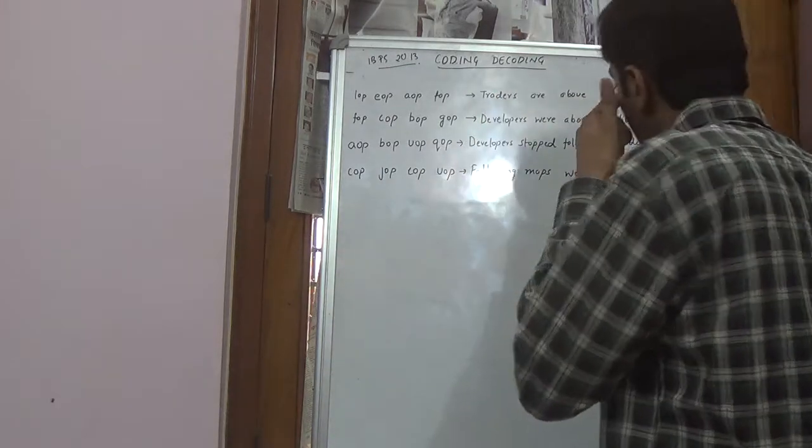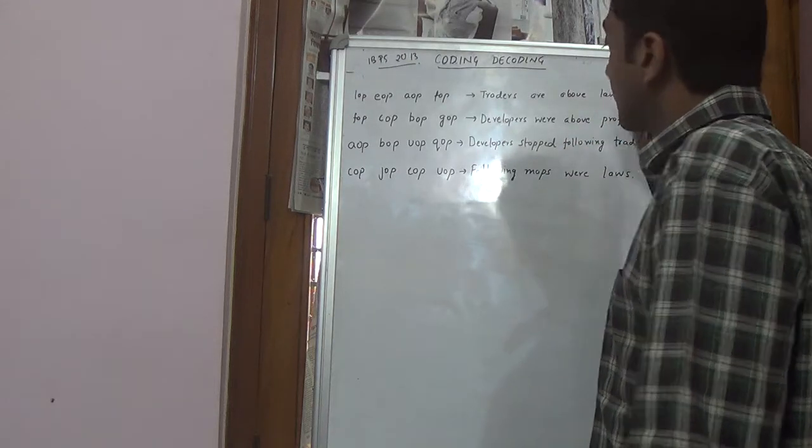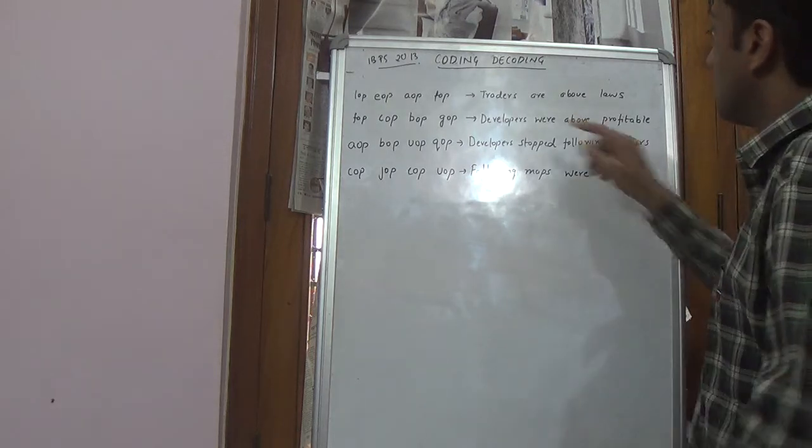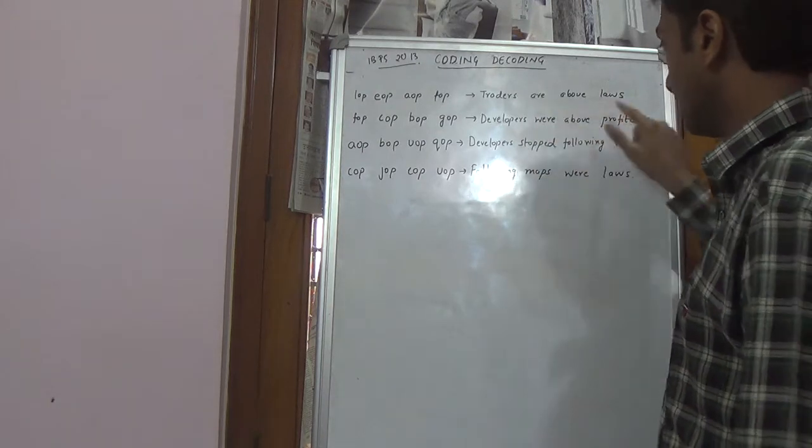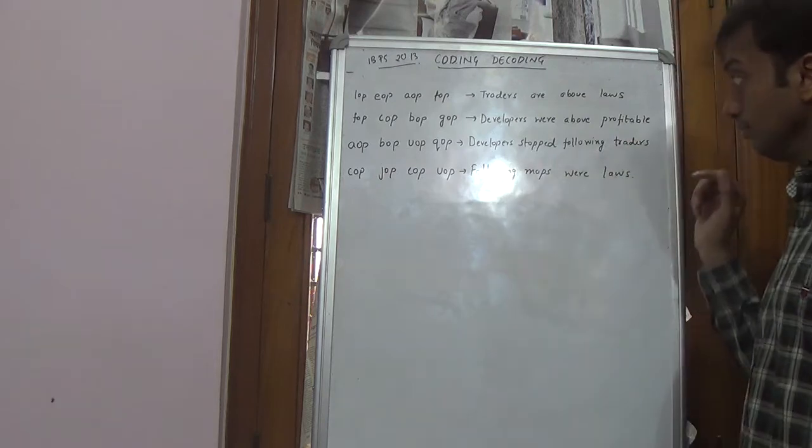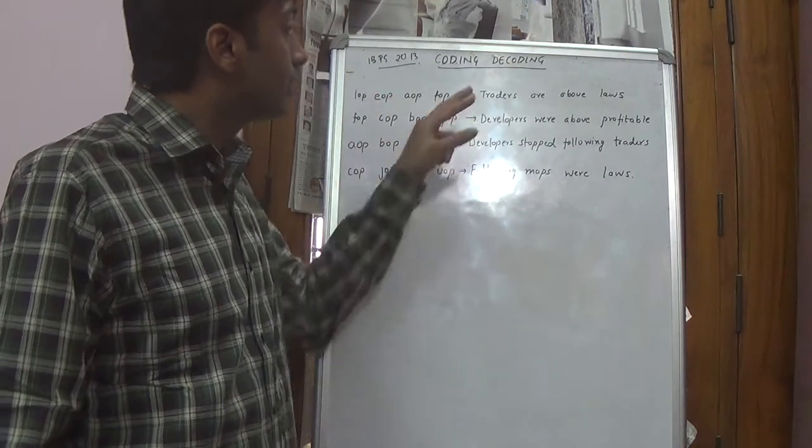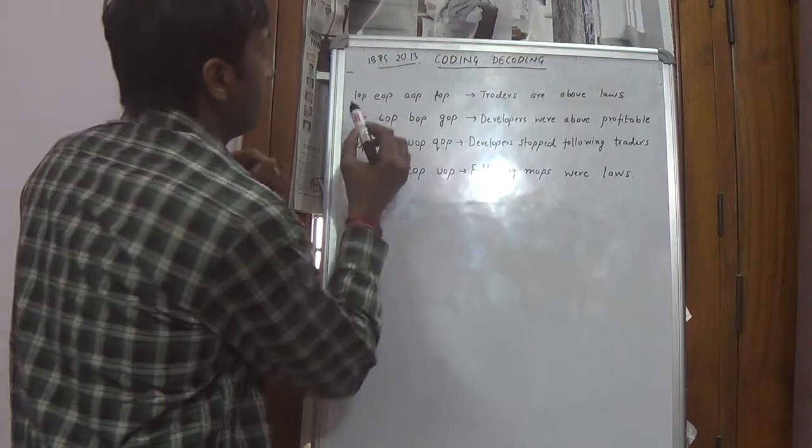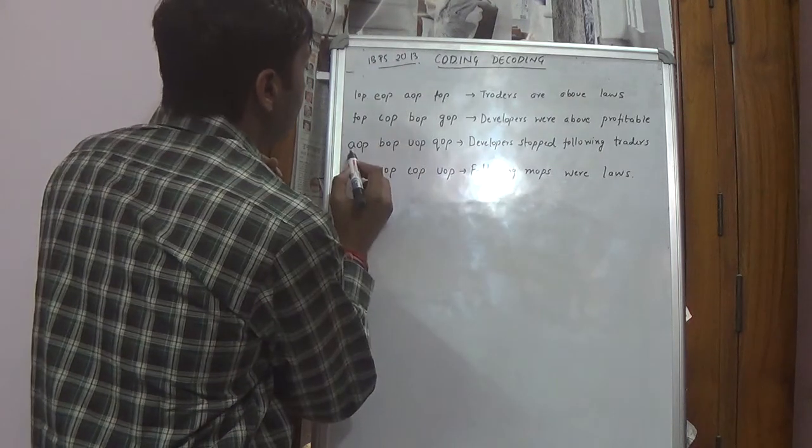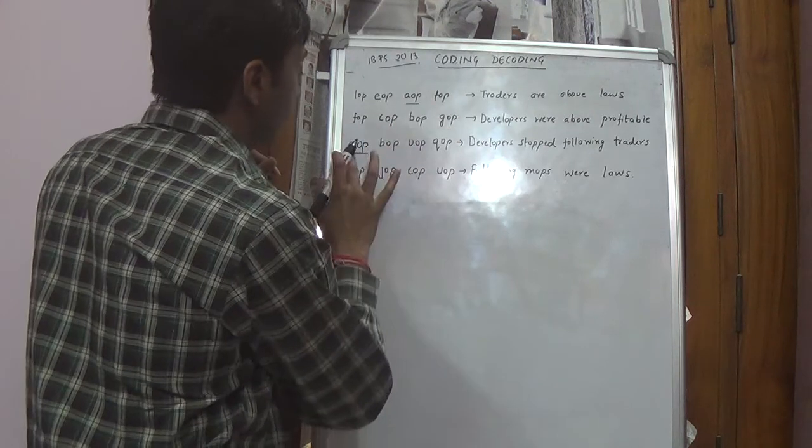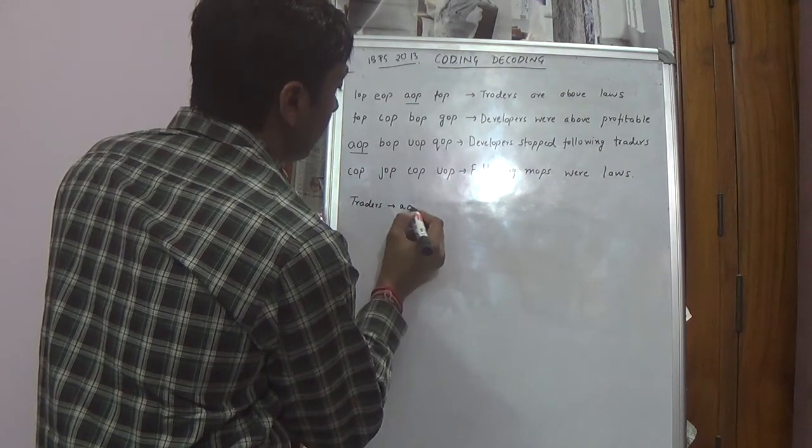So what we have to check is just the common words. Say traders. So we will check traders. Traders is in this sentence and traders is in this sentence. Only two sentences are traders. Traders are above laws. Developers stocked foreign traders. And these two are different. Developers stocked foreign is not in this sentence. Are above laws is not in this sentence. So only two. Traders is in this sentence. So we will check LOP, EOP, AOP, FOP, AOP, BOP, UOP, QOP. So we check only AOP is the word which is common in these two sentences. So we could write traders is represented by AOP.